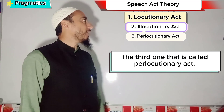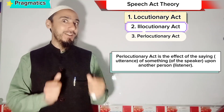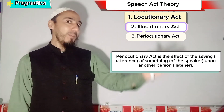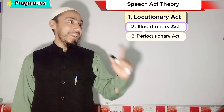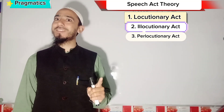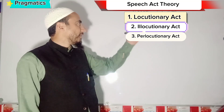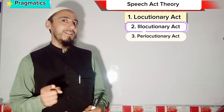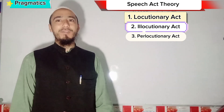The third one is called perlocutionary act. What is perlocutionary act? Perlocutionary act is the effect of the saying of something upon another person — the effect of the utterance of the speaker upon another person. You may also say the effect of the saying of someone upon another person — that is called perlocutionary act.